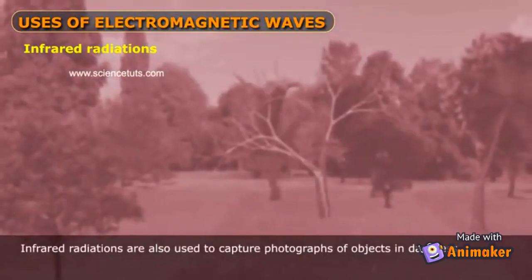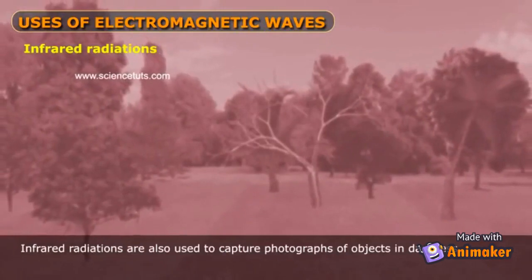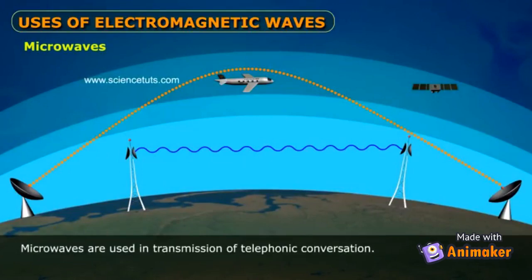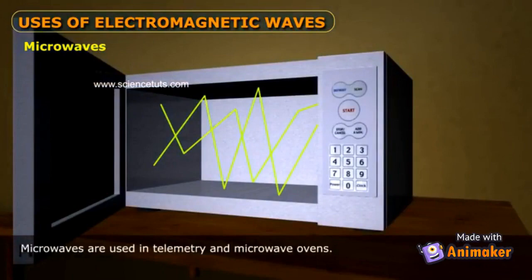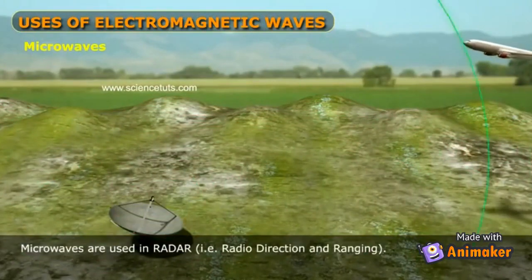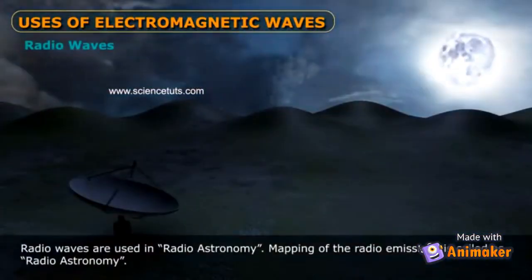Infrared radiations are also used to capture photographs of objects in darkness. Microwaves are used in satellite communications, transmission of telephonic conversations, telemetry, and microwave ovens.